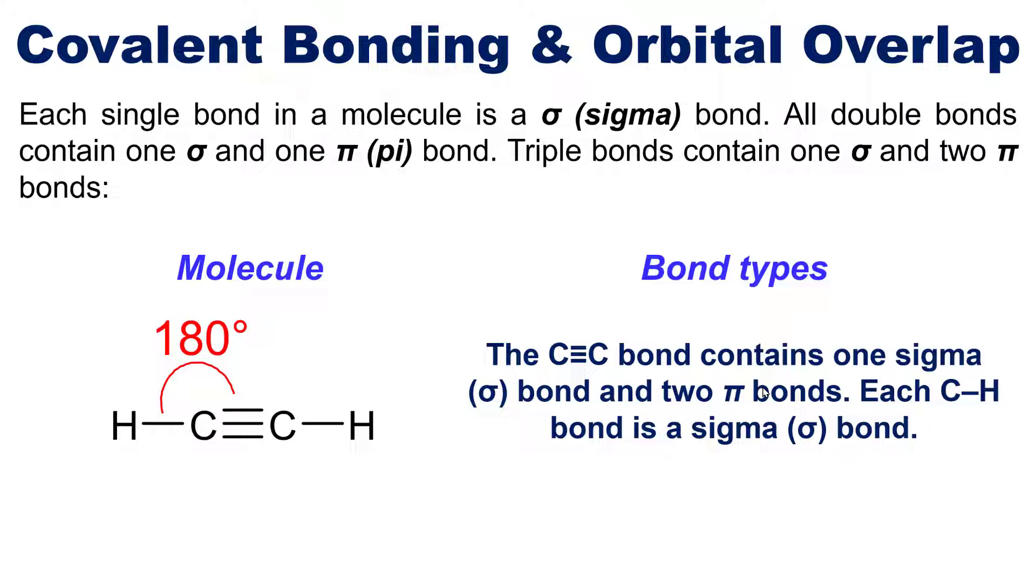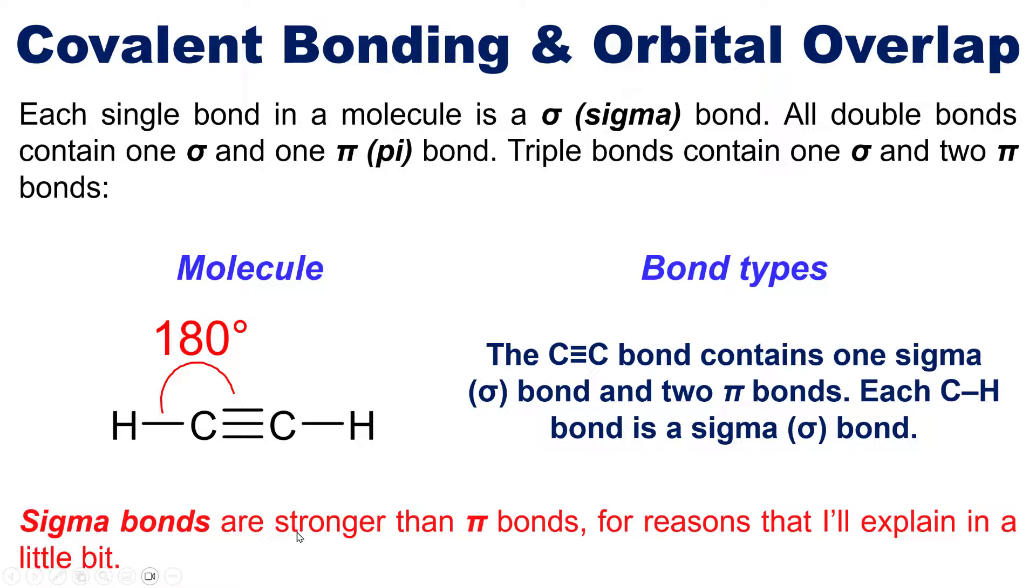Now, as additional important information, because sometimes you'll see this on exams, sigma bonds end up being a little bit stronger than pi bonds, for reasons that I'll explain in a little bit. Let's consider all of this as we look at a problem.